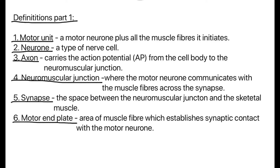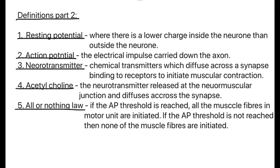The next thing is the physiology of how it works. The first one we'll look at is resting potential. Resting potential is where there is a lower charge inside the neuron than outside the neuron — it is effectively at rest. Action potential, also known as AP, is the electrical impulse carried down the axon. Remember, don't write AP in your exam, write action potential. In your notes you can shorthand to make revision quicker.